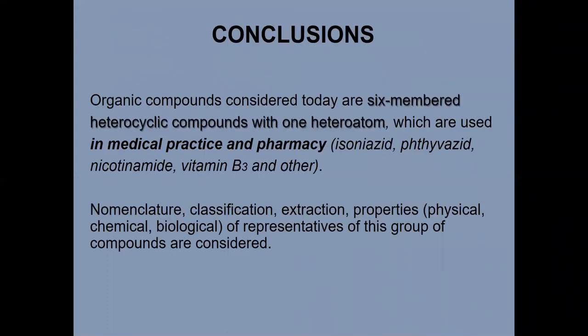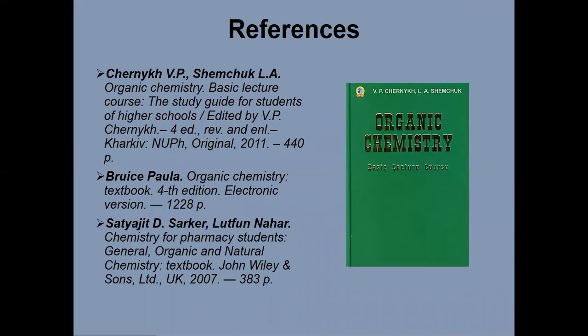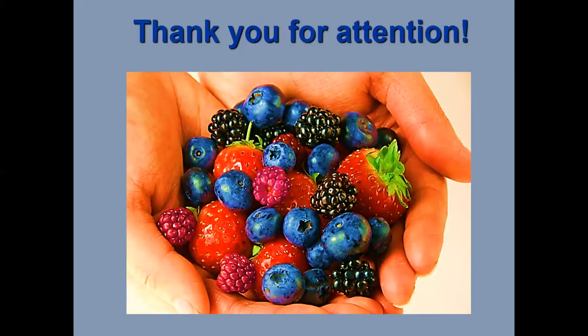Organic compounds considered today are six-membered heterocyclic compounds with one heteroatom, which are used in medical practice and pharmacy — ftivazid, Vitamin B3, and others. Nomenclature, classification, extraction, and physical, chemical, and biological properties of representatives of this group of compounds have been considered. For your attention: literature for study of organic chemistry. Thank you for your attention.